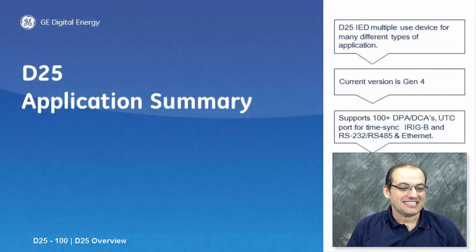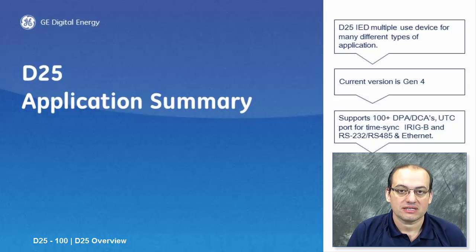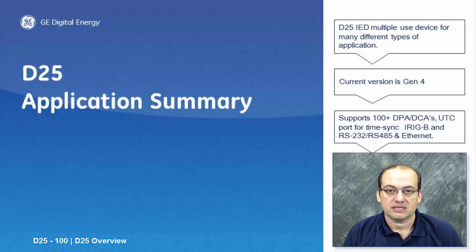The D25 also contains protection elements — for example, definite time protection and breaker failure protection schemes — which can be utilized for substation applications. In this section, we have briefly discussed seven applications of the D25 and its versatility in hardware and software. It can be utilized in many parts of your substation — at the bay, at the transformer — and not only in substations but also in industrial applications such as aluminum plants in the Gulf region.